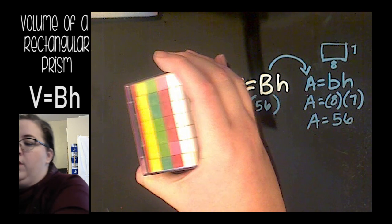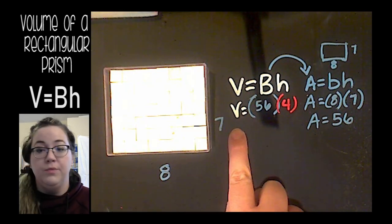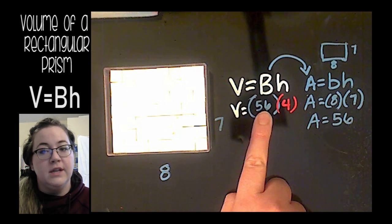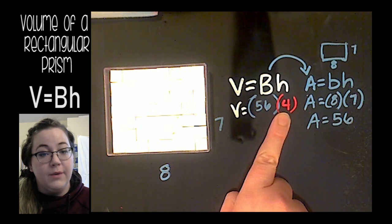It was one, two, three, four cubes tall. So the volume of this rectangular prism is 56 times 4, the area of the base times the four layers that we have.